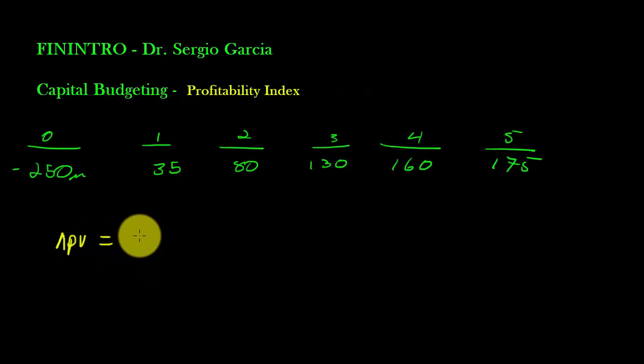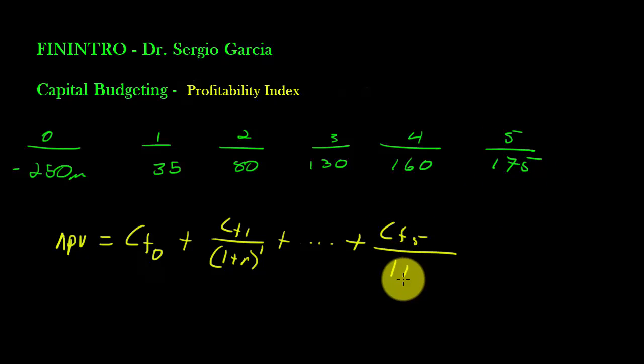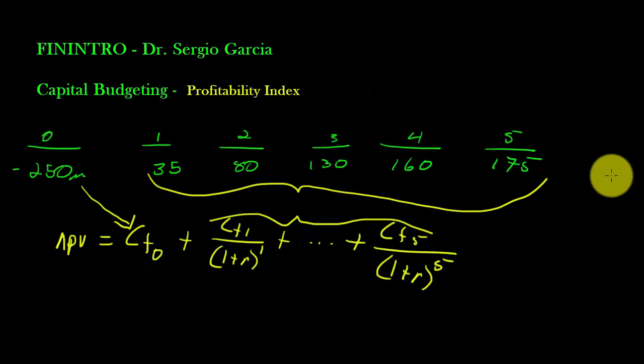Here's my NPV is going to be equal to cash flow at time zero plus cash flow one over one plus R to the one plus all of the other cash flows, three dots. This cash flow here and this subset here is this whole subset of cash flows here. This isn't particularly new stuff.